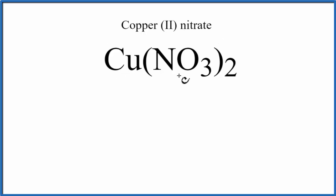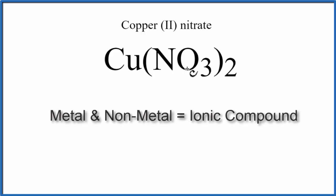Copper is a metal, and then we have N and O, those are non-metals, and they're bound together in what we call a polyatomic ion. It's called the nitrate ion. We have two of these nitrate ions. So we have a metal and some non-metals, that makes it an ionic compound.